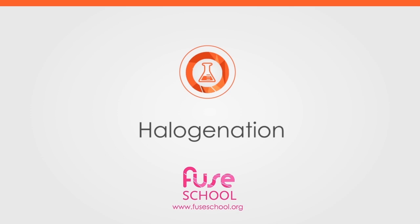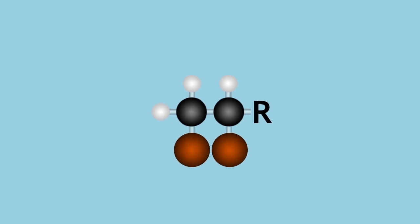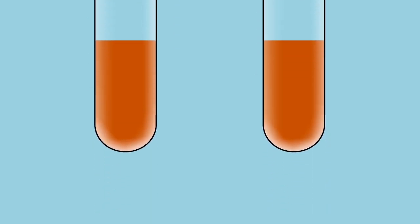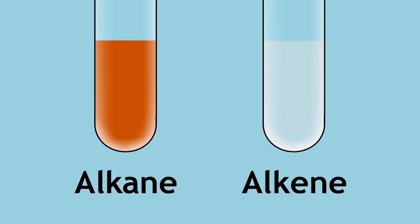In this video, you will learn how a halogen reacts with an alkene, and why the reaction of bromine is a test for the presence of a carbon-carbon double bond and the alkene functional group.